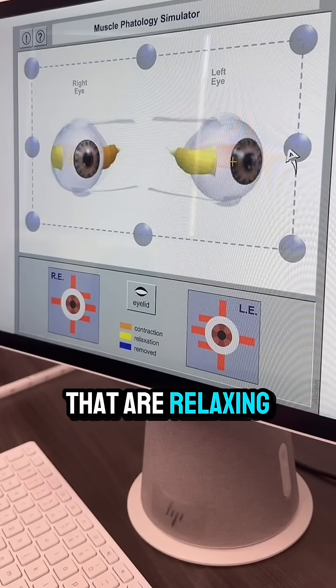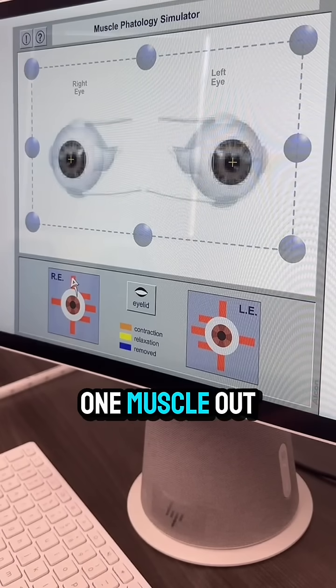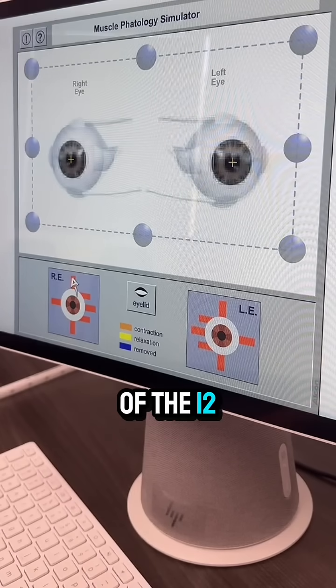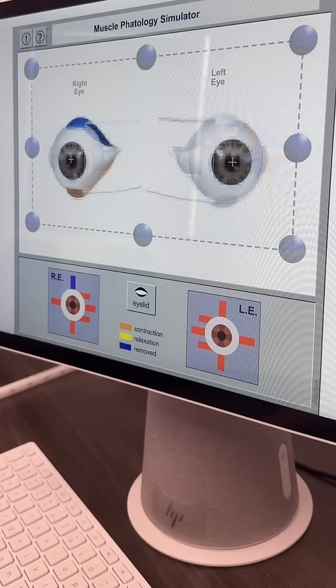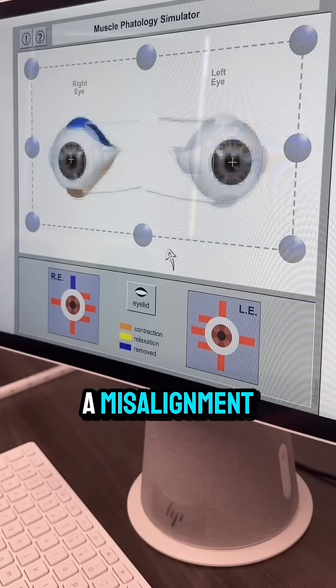Look at what happens when just one muscle out of the 12 stops working. Now you got a misalignment.